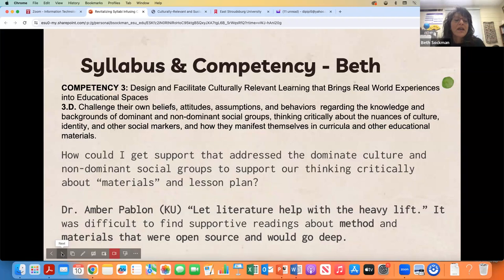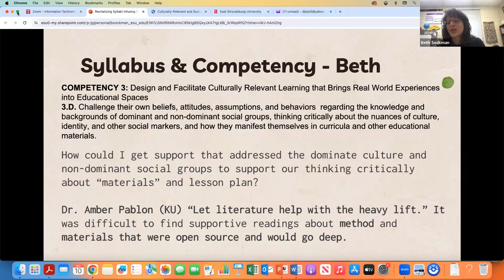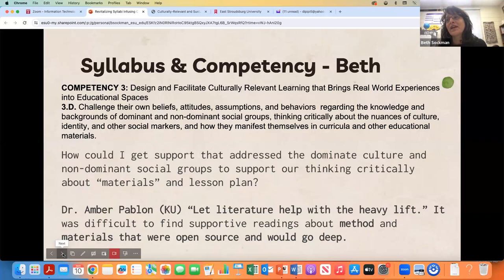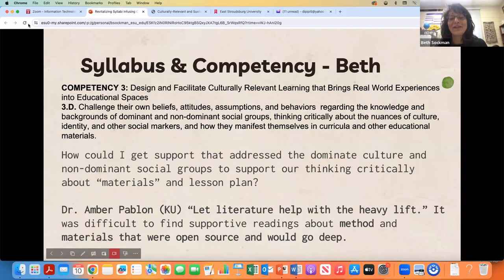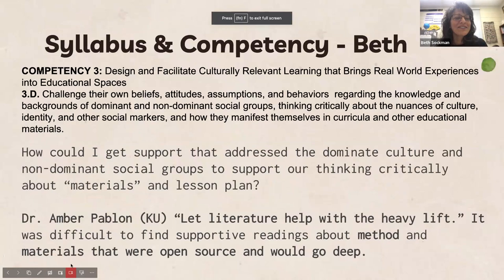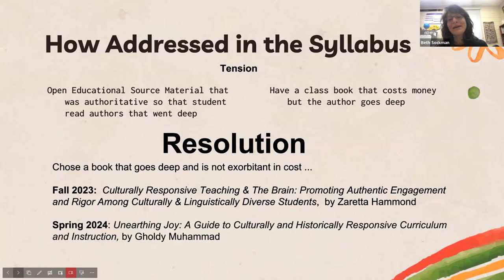I had some tension with this. As someone who believes strongly in open educational resources, I was already using OERs and not having students purchase a book. But I realized this is very important. Students are buying books all the time — usually by white authors. So if I ask students to buy a book from the perspective of a Black author that really brings the culturally relevant and sustaining education competencies alive in a digestible way, it's worth the money. I found 'Culturally Responsive Teaching and the Brain' by Zaretta Hammond — it addresses neuroscience in digestible terms and gives strategies for the learning partnership, building cultural humility, and questioning ourselves. Dr. Amber Pablon from Kutztown University said: 'Let literature help with the heavy lift.'